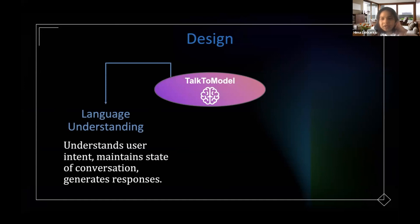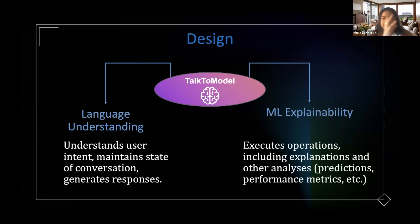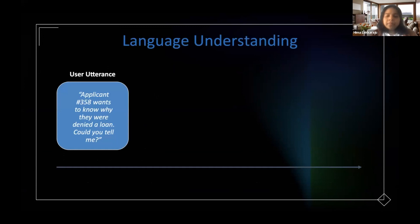Talk to Model, which is the name of this tool that we built, has two parts to it. One is having this language understanding engine which takes the natural language inputs provided by the users. The other side is the ML explainability engine which basically picks an appropriate method and explanation that is most reliable and then communicates that to the user again in an accessible format.